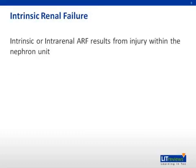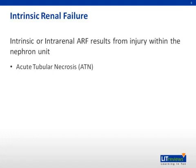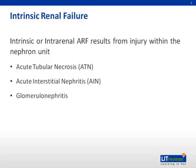The second category is intrinsic or intrarenal acute renal failure, which results from injury within the nephron unit or the renal parenchyma itself. Causes include acute tubular necrosis (ATN), acute interstitial nephritis (AIN), glomerulonephritis, and thromboembolism.